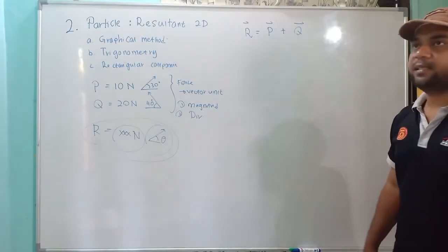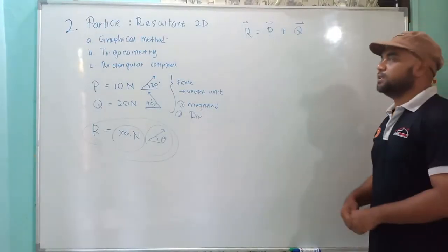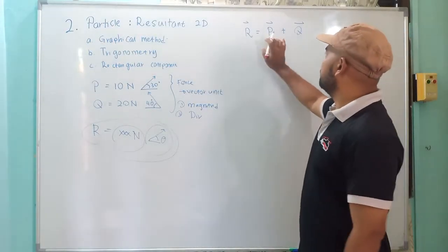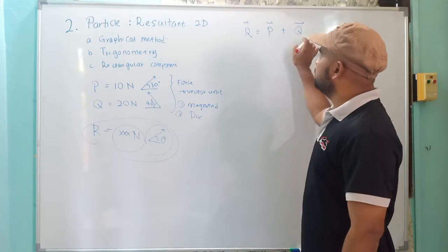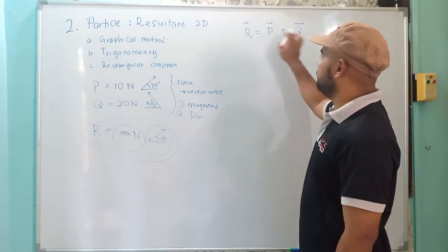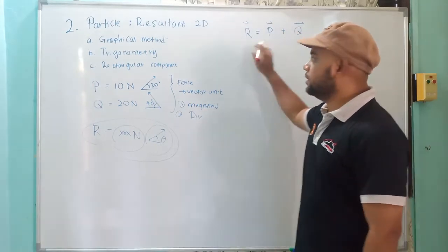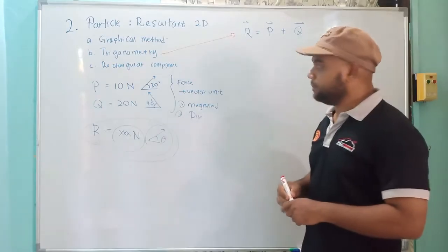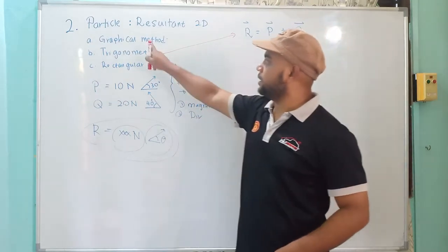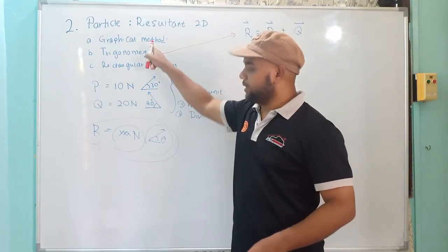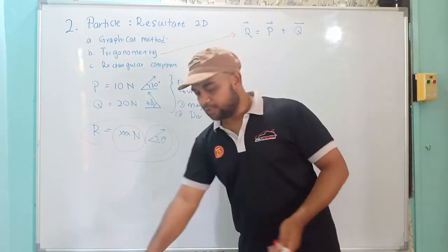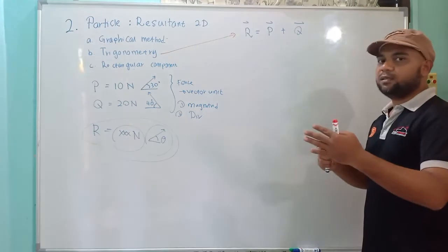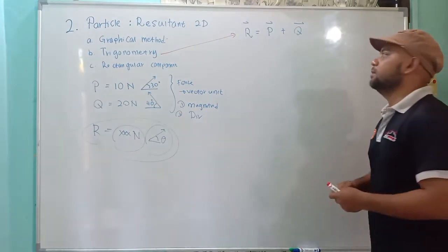For the second method, the trigonometry method, we have R equal to P plus Q, or you can use Q plus P — same. So we use trigonometry. The first step is the same, but for the graphical method, the first and second steps will be the same; only the last one differs — instead of measuring, we have to calculate.